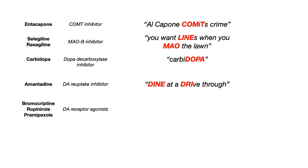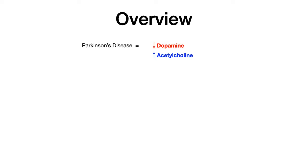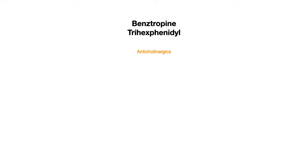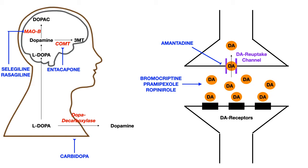For bromocriptine, ropinirole, and pramipexole, there's no mnemonic needed — most medical students recognize bromocriptine as a dopamine receptor agonist. Remember at the start of this lecture I told you there were two ways to treat Parkinson's disease: increasing dopamine because the problem is decreased dopamine, and decreasing acetylcholine because there's a relative excess. So it should make sense that the last two drugs are anticholinergics — they decrease acetylcholine. The two drugs are benztropine and trihexyphenidyl, both anticholinergics. Their adverse drug reactions are all the anticholinergic effects you've already memorized. That summary slide contains everything you need to know to do well on Parkinson's drug questions.